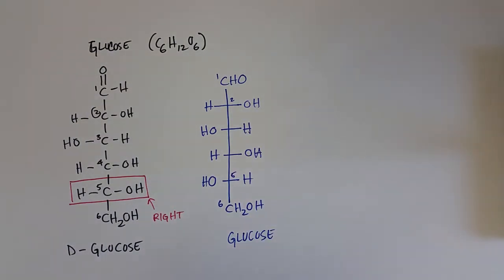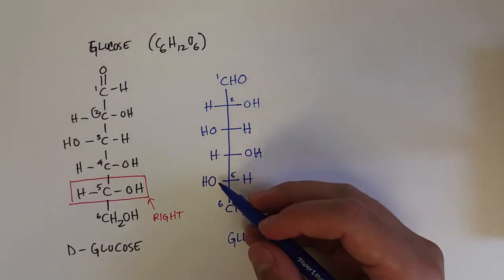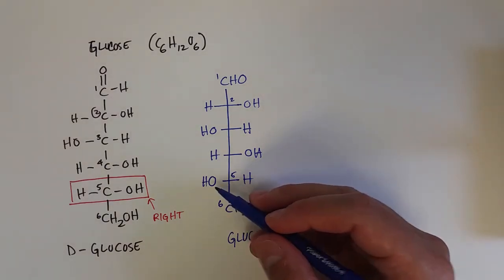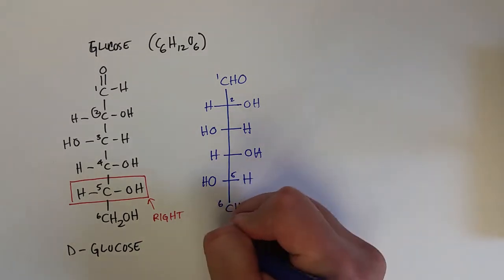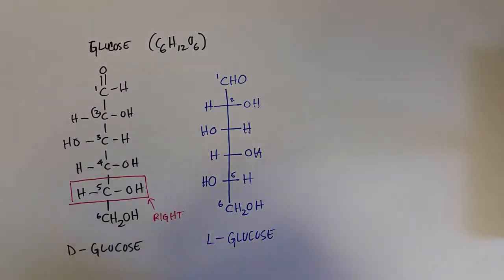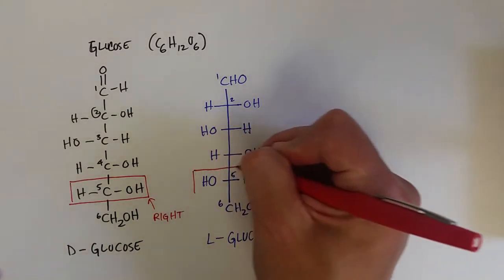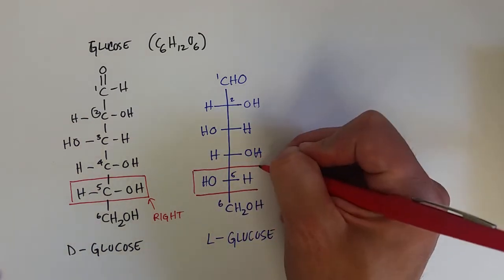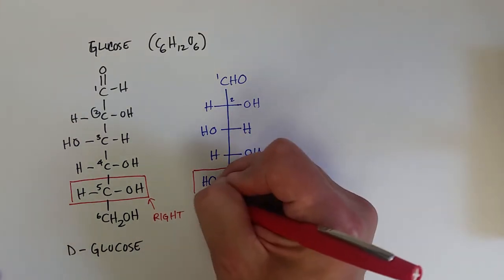Now here, the carbon on the fifth is where I'm going to look to name these isomers. The hydroxyl group on the fifth carbon in glucose is on the left side, so I'm going to label this as L-glucose because that is the L isomer. The hydroxyl group on the fifth carbon is on the opposite side, so it is a different isomer than the one I wrote before.